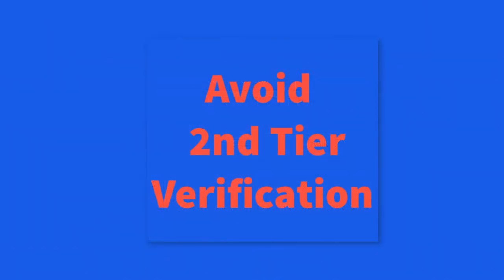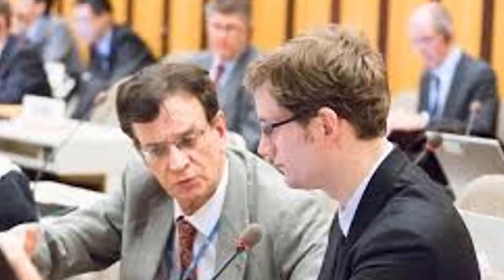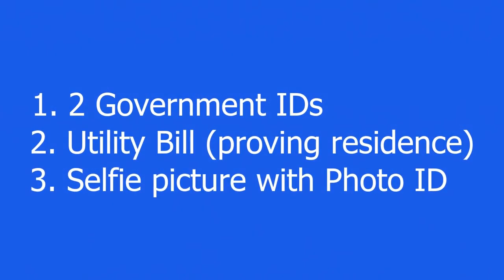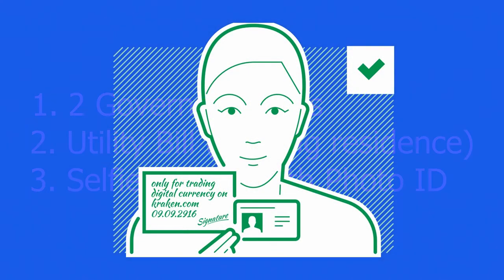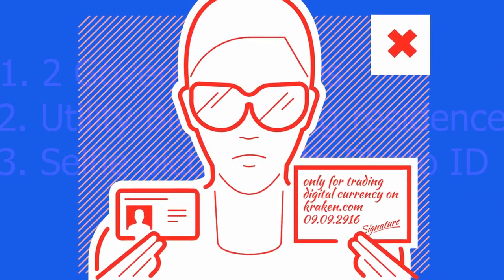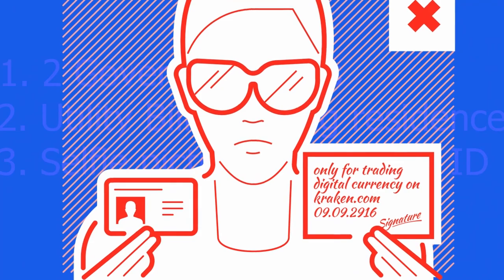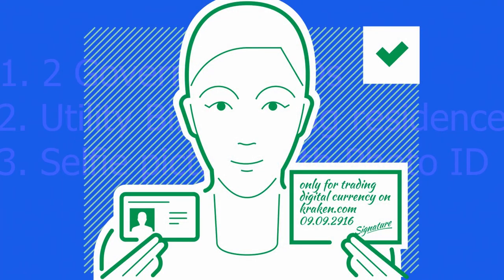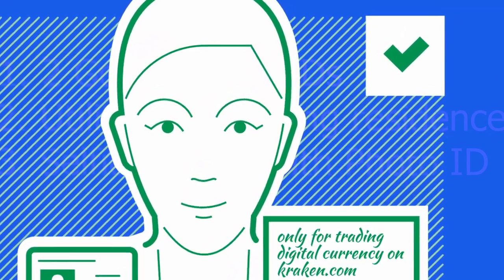Avoid having to enter the second tier verification at all costs. Take the time to do your first attempt correctly. If you are bumped to the second tier verification process, a live person will have to review your IDs, and you will now be required to submit second tier documentation — which often involves two government issued IDs, a current utility bill with proof of your current residency, and a picture of you holding a picture ID next to your face. Once that process starts, it can take a week or more to get verified, and many more documents will be needed. Take the time to do it right the first attempt and let the automatic computer system handle the task in less than five minutes.